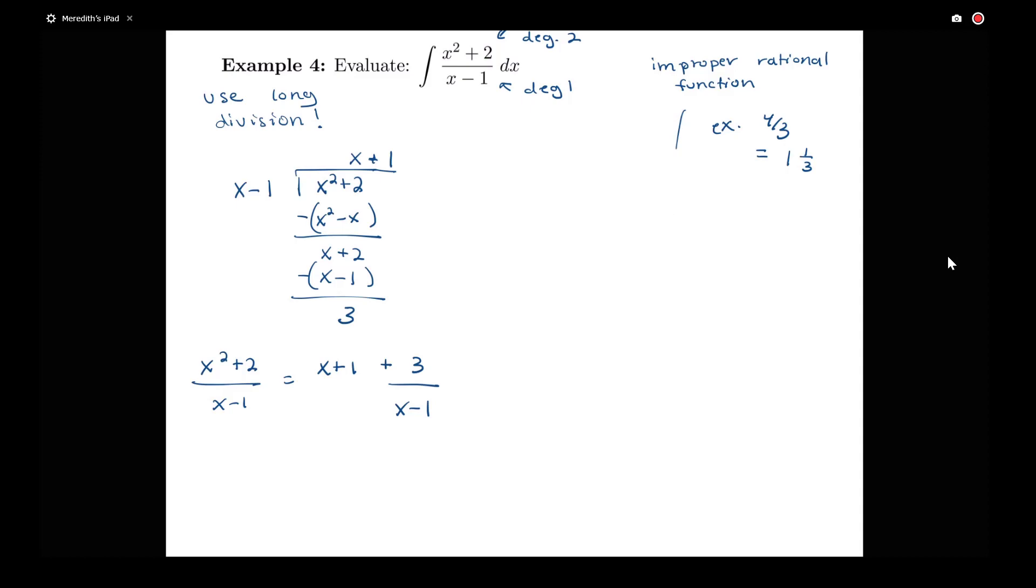It may help to think about how this compares to when we would do long division just with numbers. If we take another example, like the fraction 7 over 4, we know that would be equal to 1 and 3 fourths. If I do 7 divided by 4, I have 4 going into 7 once. 1 times 4 is 4. I have this remainder of 3.